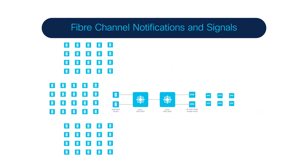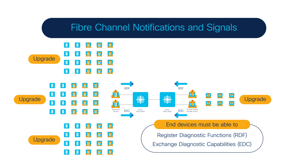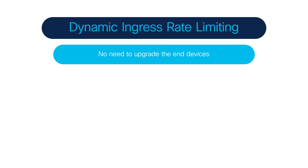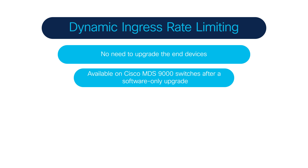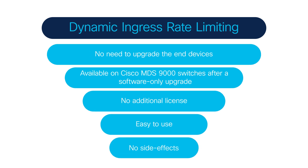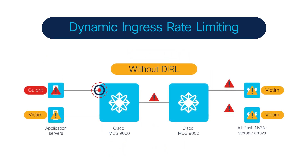This standards-based approach has a bright future, but end devices must be capable of registering and receiving the notifications, and for that they must be upgraded. A total upgrade with 32 or 64 gig connectivity will solve many problems, but it's quite an expensive approach and upgrading large environments is a multi-year project. This is where DIRL helps — while you're deploying all-flash NVMe arrays today, it has zero dependency on end devices. You can use DIRL on MDS switches after a software-only upgrade, with no additional license required.